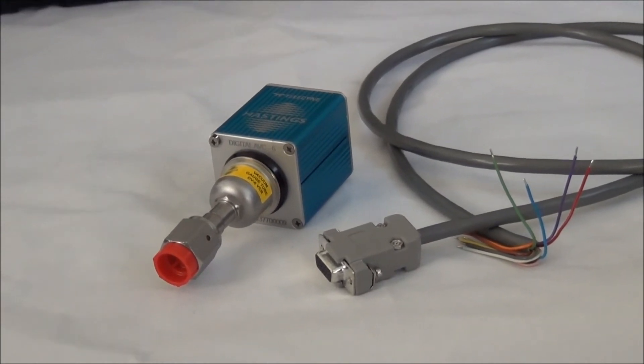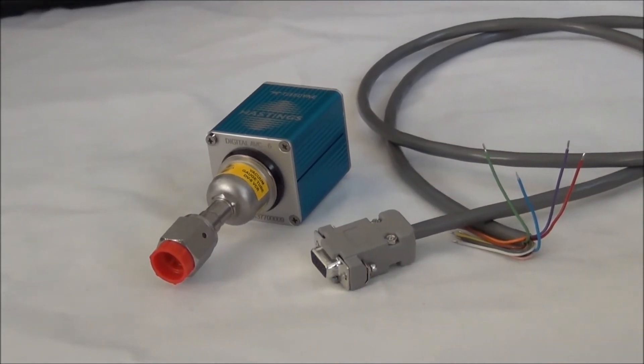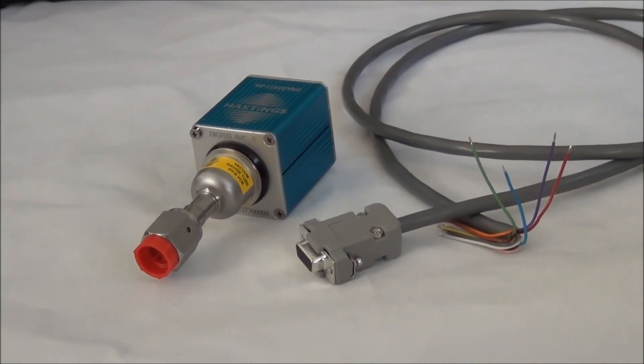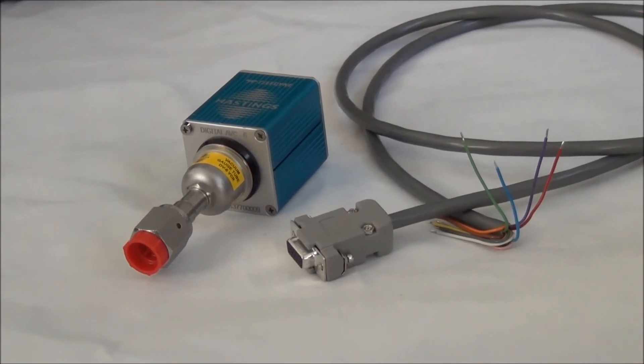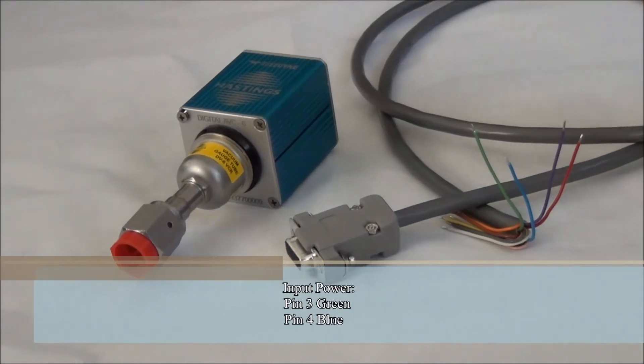Now in our example, we're just going to use four wires: two to bring power in and two to bring back the linear analog output. To feed the 24-volt, we need pin 3, that's the green wire, and the power common is pin 4, that's the blue wire.